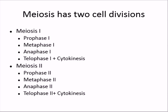Meiosis has two cell divisions. There's meiosis I, and notice it has a prophase I, metaphase I, anaphase I, telophase I, and usually there's cytokinesis going along with this, but not necessarily. Then meiosis II has prophase II, metaphase II, anaphase II, telophase II, and cytokinesis. The result, when you're all done, is four haploid cells, and those in animals will become the gametes — the egg and the sperm.